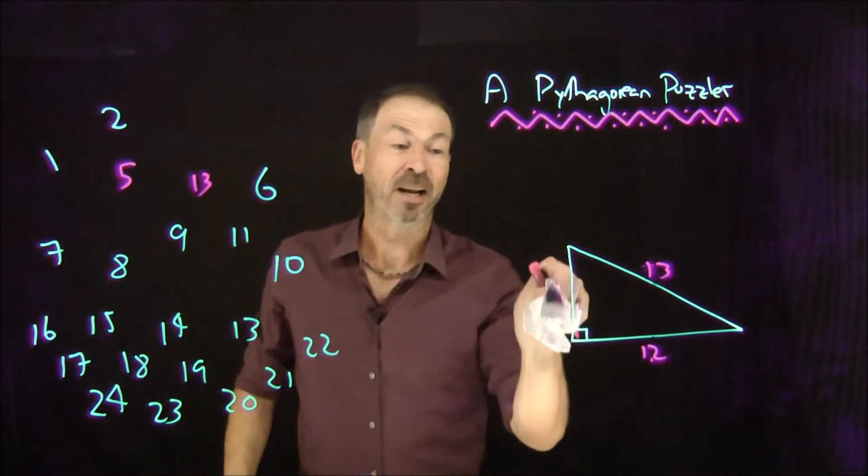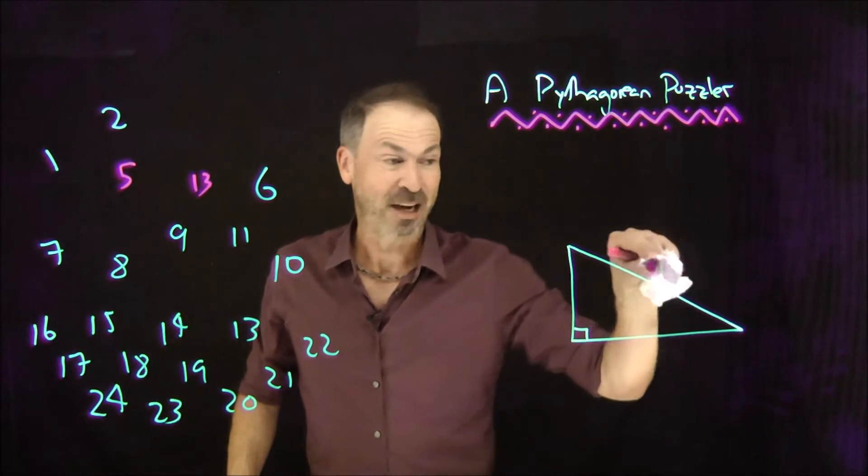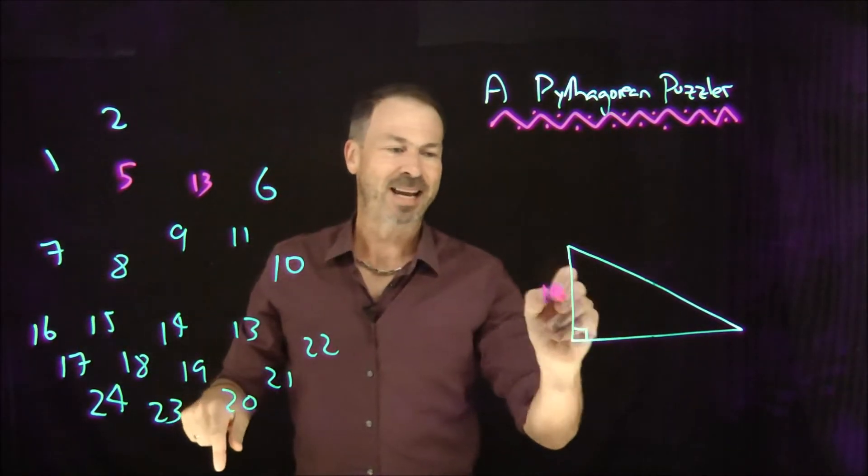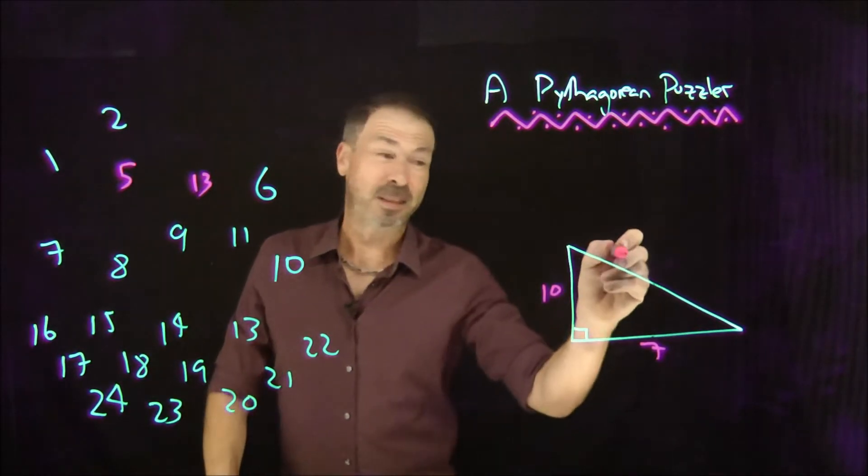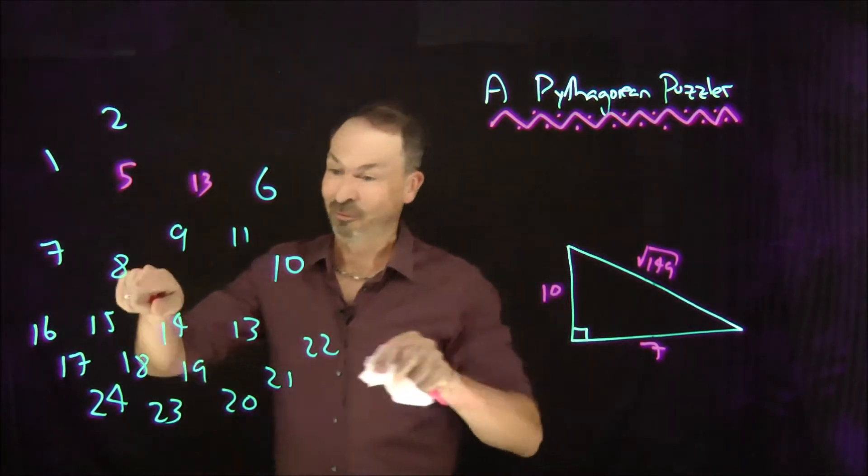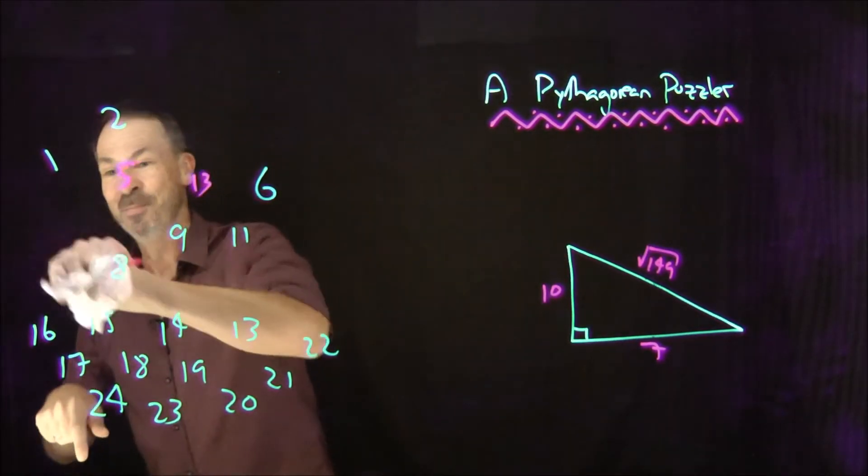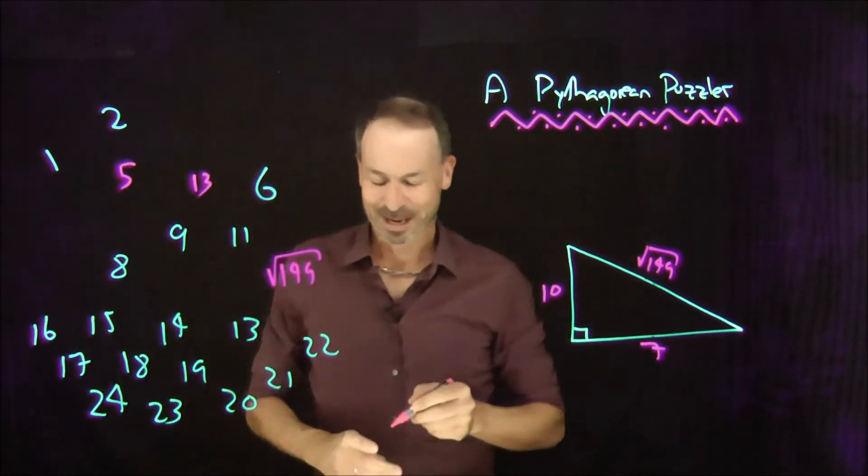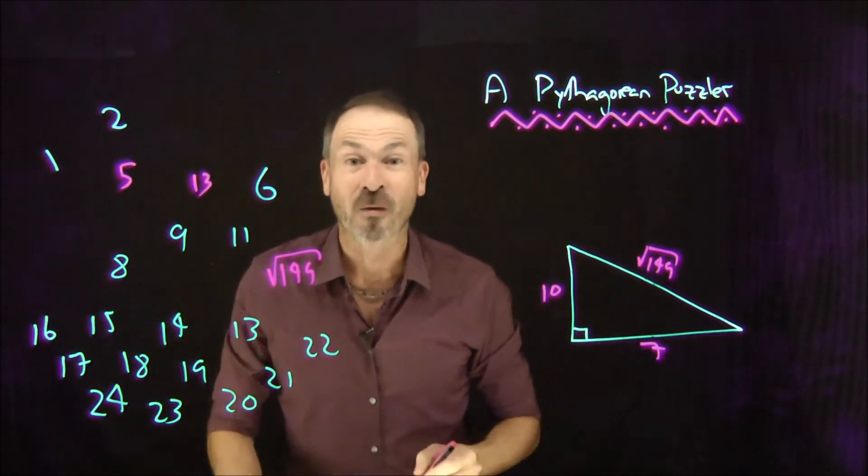And I keep doing that over and over again, but I don't have to be nice. I can choose two awkward numbers like 10 and 7. In which case this would be by Pythagorean theorem, square root of 149. I'm out of the integers, but I'll erase 10 and 7 and replace them with the square root of 149. And I'm going to do that over and over and over again.